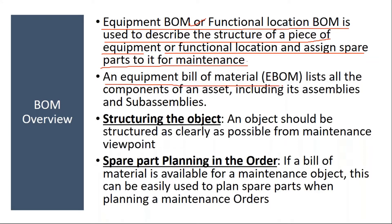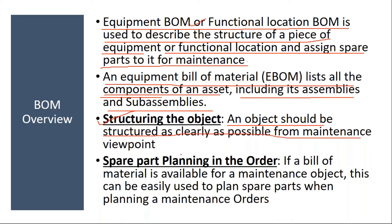An equipment bill of material lists all the components of an asset — that means all the spare parts and all the components, including its assemblies and sub-assemblies. Basically, why do we need to create the bill of materials? One reason is for structuring the object. You will get the structure of the object. An object should be structured as clearly as possible from a maintenance view.